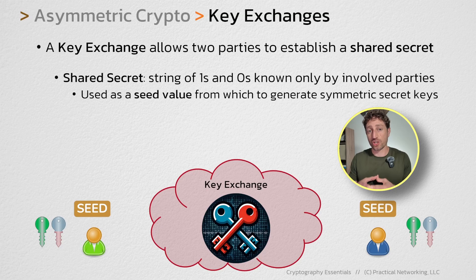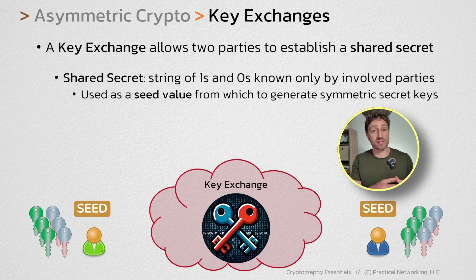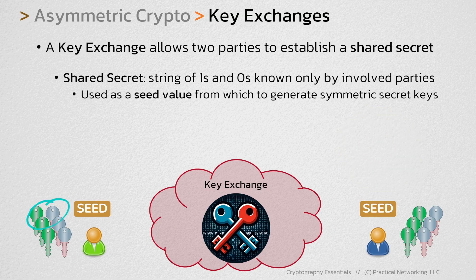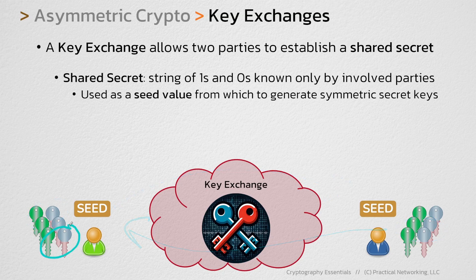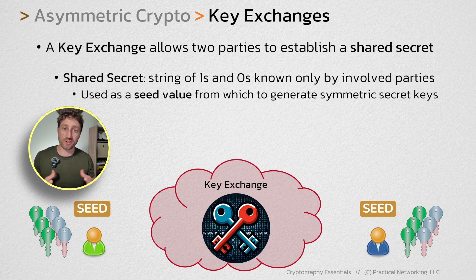You can generate as many symmetric secret keys as you want. Earlier in the series we talked about a PRF, or a pseudo random function. What you can do is feed that shared secret into the pseudo random function to generate as many symmetric secret keys as you want — meaning you could have one set of keys that protect the data going this direction, another set of keys that protects the data this direction, and potentially a third set of keys that protects the control traffic between these two users to ensure they're using the right keys.